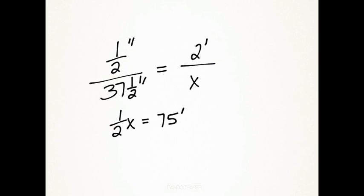When we do that we get one half x equals seventy five feet. We need to use the reciprocal of one half in order to find out what x equals. And without getting your feet wet you were able to find out that the distance across the lake is one hundred and fifty feet.